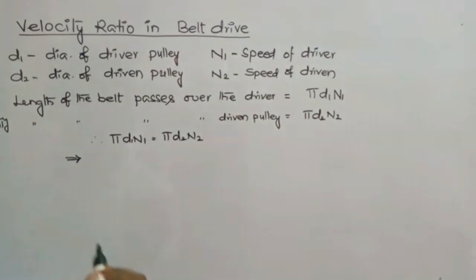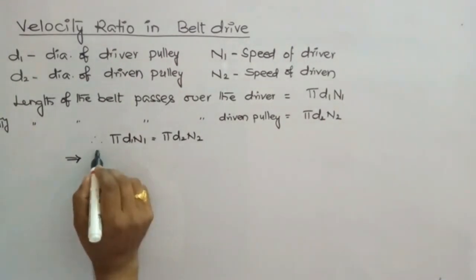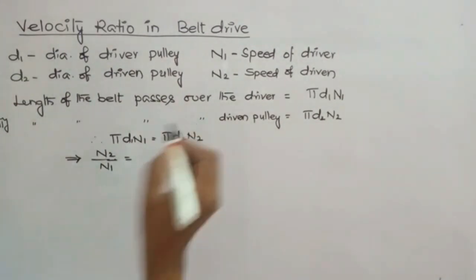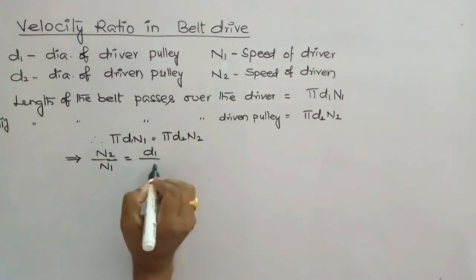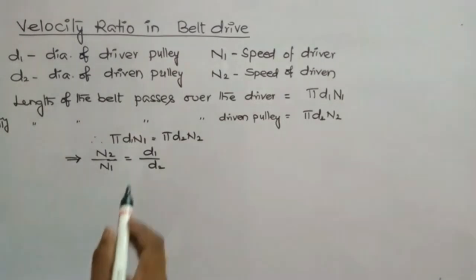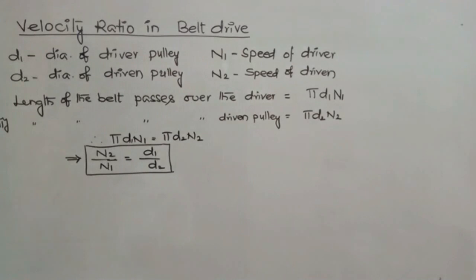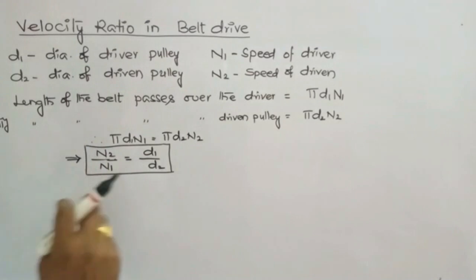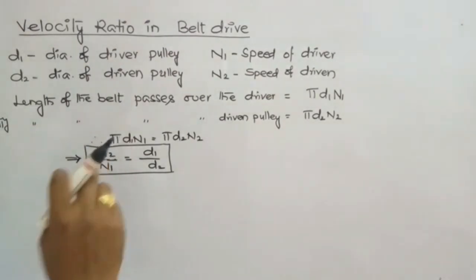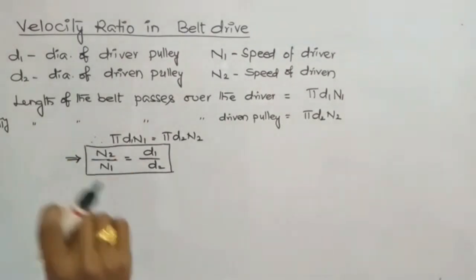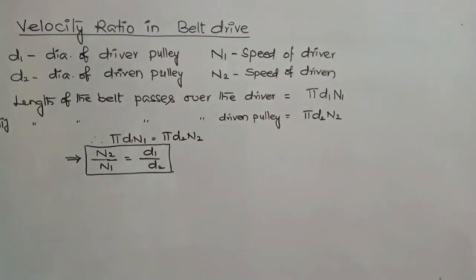From πd1·N1 = πd2·N2, π cancels on both sides. Therefore, N2/N1 = d1/d2. This is the velocity ratio, or speed ratio, for the given belt drive. Speed of the follower (driven, output) divided by speed of the driver (input) equals d1/d2. This means speed is inversely proportional to the diameter of the pulley.